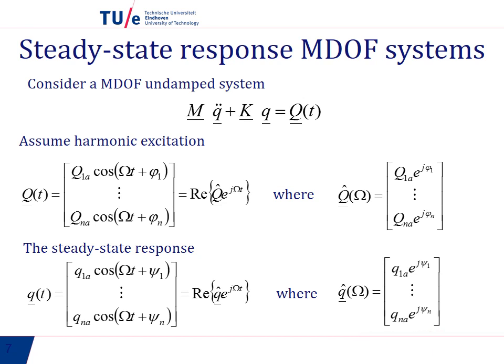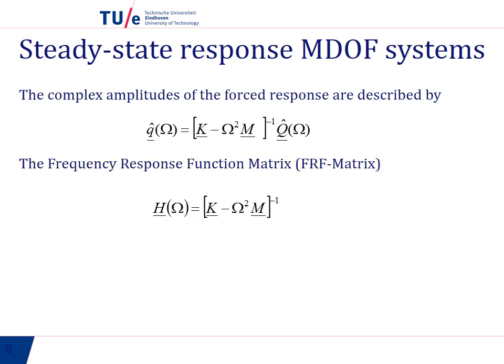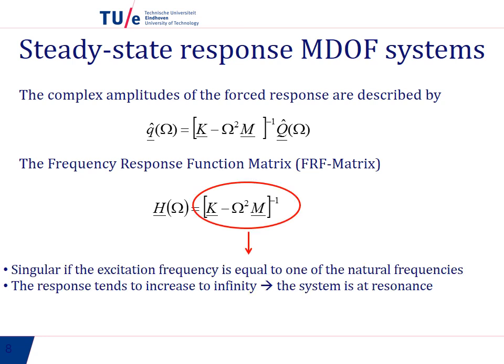So we substitute this in the equation of motion and we find a relationship between the complex amplitude of the response and the complex amplitude of the excitation. And this, you see it here, is the frequency response function matrix. This is a matrix. And this matrix will of course be singular at the natural frequencies. So that means the response tends to infinity, exactly the same as for the single degree of freedom system.